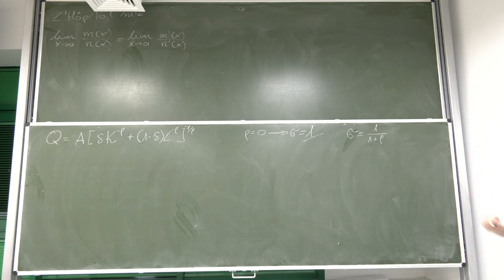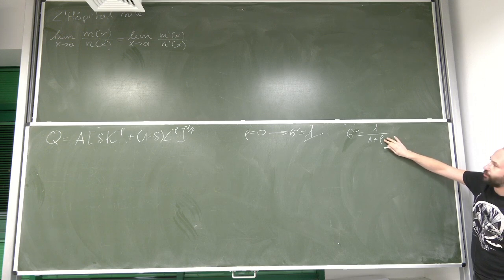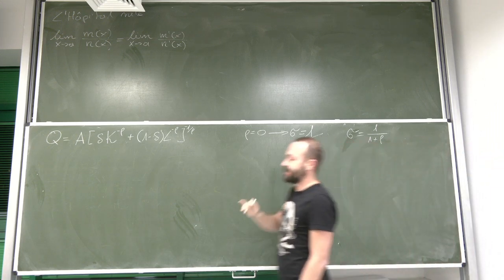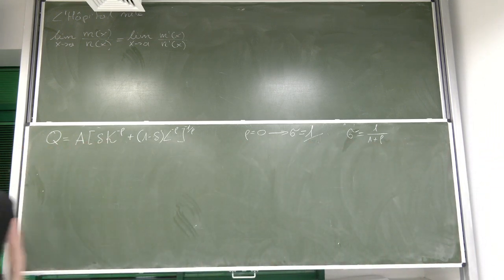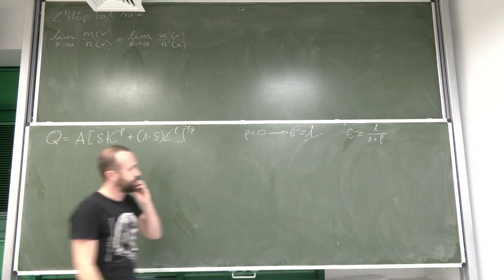Now, we also noticed that if we have a limiting case with rho equal to 0, elasticity of substitution would be 1.